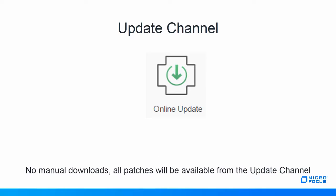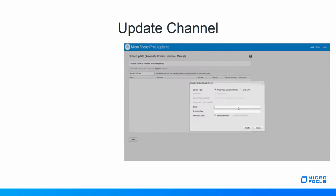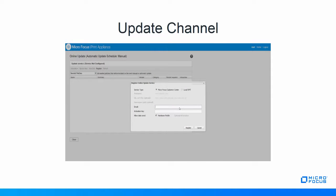Next on our list is a feature which saves a lot of time and effort for our customers. Update Channel is a huge relief for administrators who earlier had to patch all of the appliances using manual methods. Registration to the channel is simple and very similar to the OES registration process. All updates will now be delivered to this dedicated print channel. A single activation key is required for future patches and features. There is a manual mode and a scheduled mode of update, and this framework has notification and viewing capabilities.